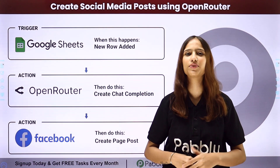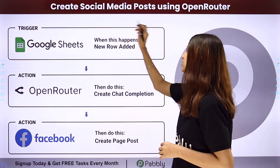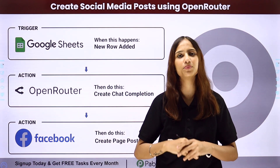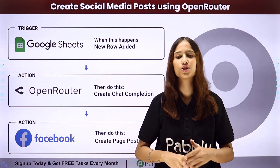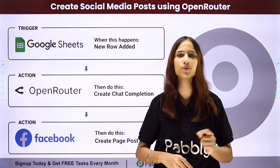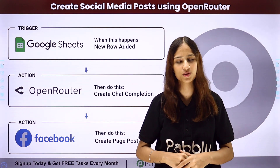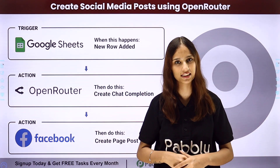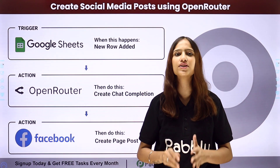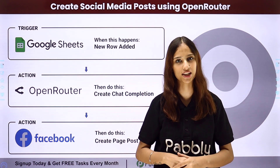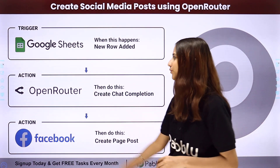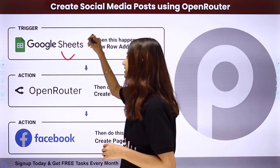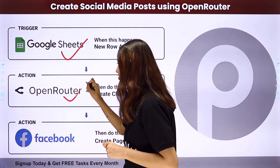Hello everyone, welcome back to Pabbly. In today's video we will understand how to create social media posts using Open Router. Here I have a Google Sheet where I have added the post title or caption. My objective is that whenever I add a new post title or caption, I wish to generate the post content automatically using Open Router. Once the post content is generated, I wish to create it as a post for my Facebook page. To do this, I need to build an integration using Pabbly Connect, where my trigger application will be Google Sheets and my action applications will be Open Router and Facebook.